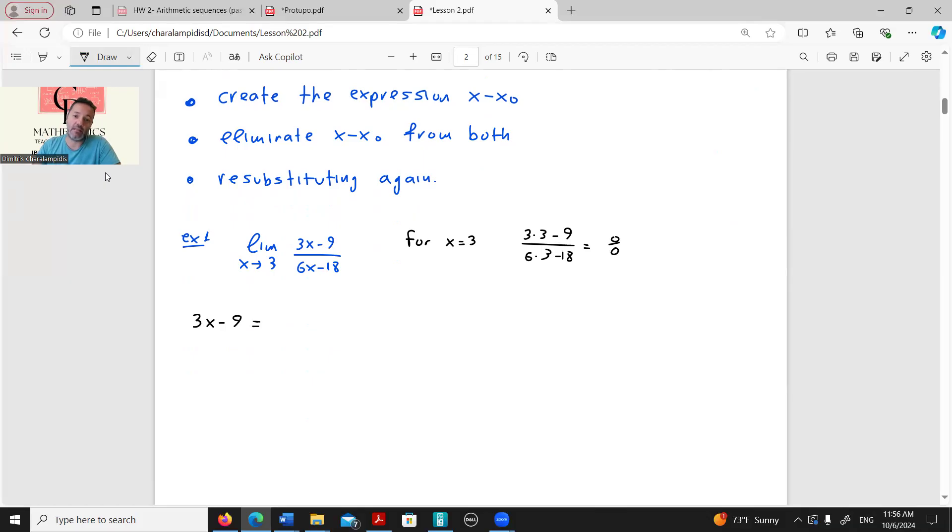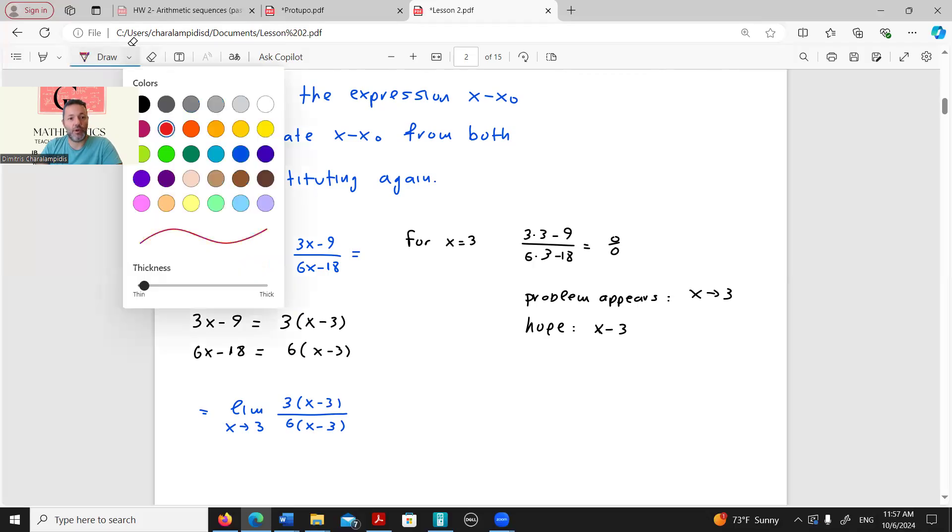So let's take the numerator separately, 3x minus 9. Since we know that problem appears when x tends to 3, we hope that these factorizations will produce x minus 3. Indeed, 3x minus 9 can be written as 3 times x minus 3, and 6x minus 18 can also be written as 6 times x minus 3, which means that I will now continue by writing these equivalent expressions instead of numerator and denominator.